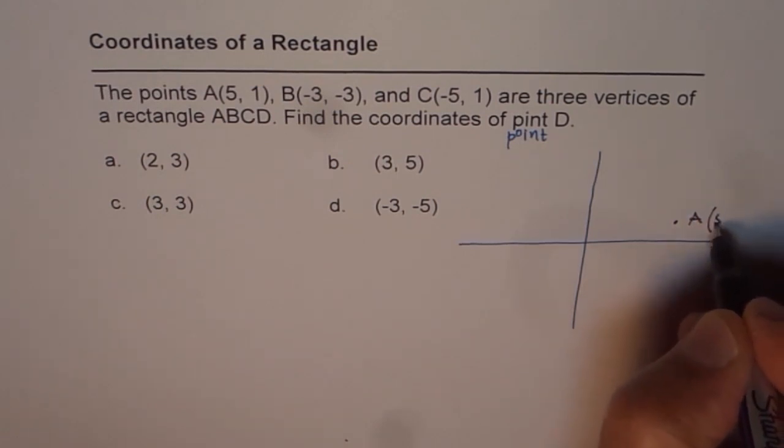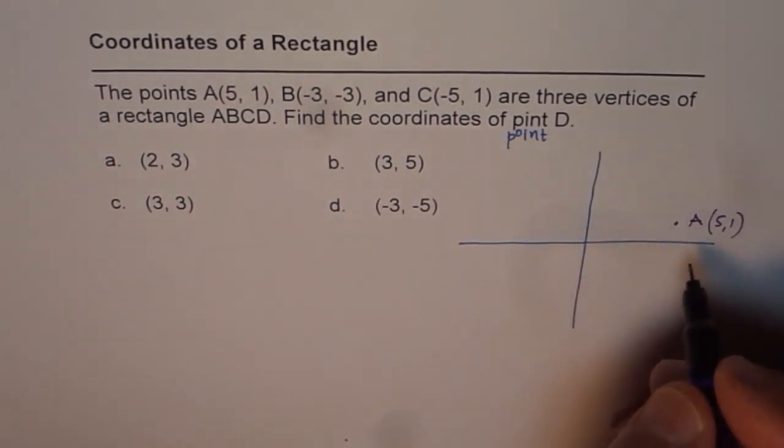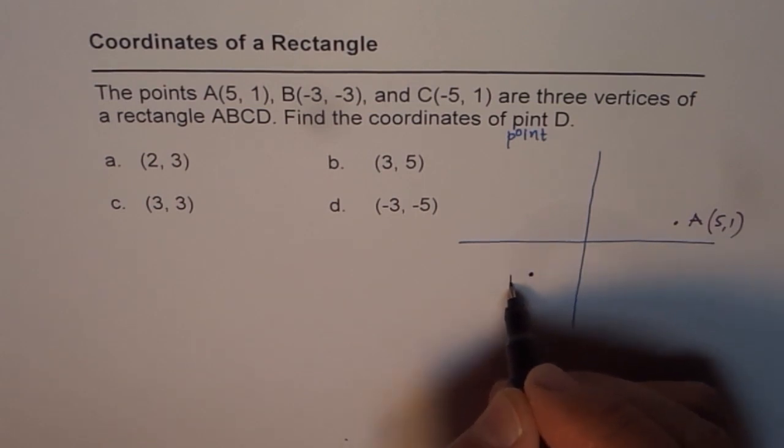Point B is (-3,-3), so that is approximately, let's say this point is point B for me, which is (-3,-3).